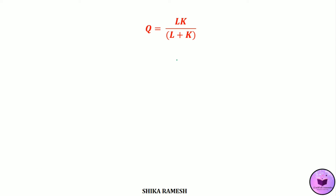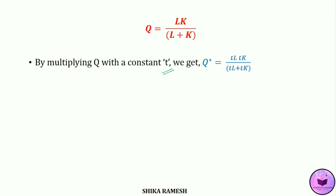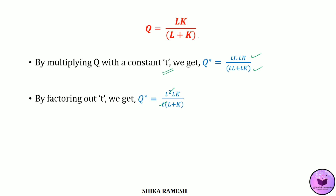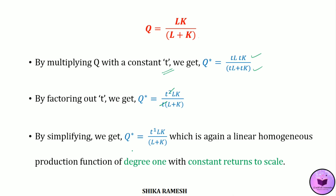Let us take one more example: Q = LK / (L + K). We multiply the production function with a constant T. Since the production function is in fraction form, we multiply T onto both numerator and denominator, giving Q* = TL·TK / (TL + TK). Factoring out T, we get Q* = T²LK / T(L + K). Cancelling T from denominator and one T from numerator, we get Q* = T raised to 1 times LK / (L + K). Since N equals 1, this is a linear homogeneous production function implying constant returns to scale.